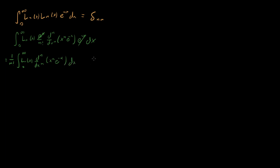Now I'm going to make an assumption: I'll assume that m is greater than n. I'm not losing any generality here, because if n were greater than m, I could just commute them and change labels. So this case corresponds to any situation where n is not equal to m.